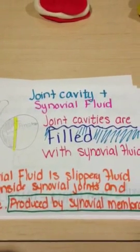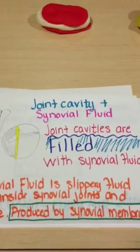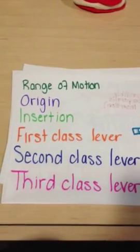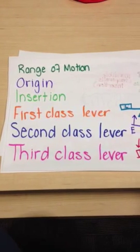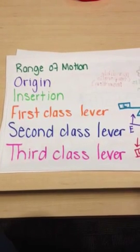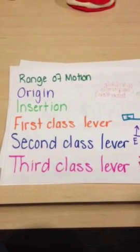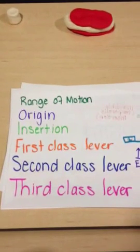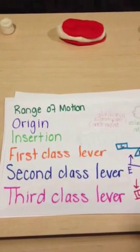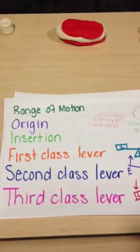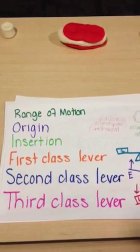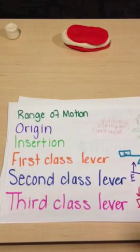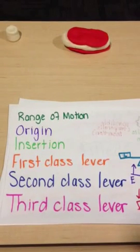Other important facts about joints: range of motion, origin, insertion, first class lever, second class lever, and third class lever. Range of motion is the full extension to full flexion measured by degrees, like a circle, for the joints. Origin is the immovable part. Insertion is the movable part.